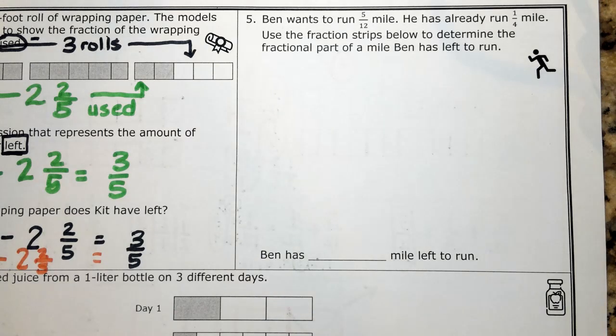Number 5. Ben wants to run 5 twelfths of a mile. He has already run 1 fourth. Use the fraction strips below to determine the fractional part of a mile Ben has left to run.